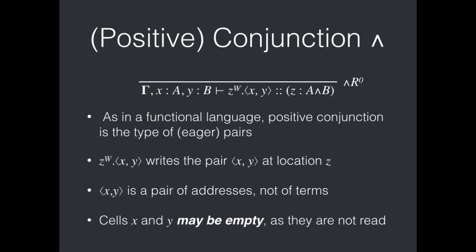Next, we'll look at the conjunction. And as in a functional language, this is the type of pairs. And here we have parentheses both positive and eager because we also have a negative conjunction, which corresponds to lazy pairs that we're not going to get into detail about here, but that we'll briefly look at later.